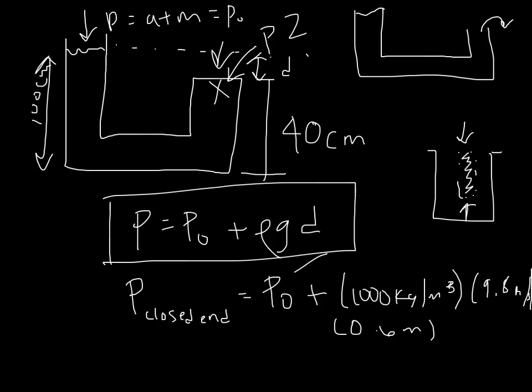So P naught, for those of you that don't know this, atmospheric pressure is 1.1 times 10 to the 5th pascals. So therefore, if we just put that into the calculator, we get that the P at the closed end is equal to 1.07 times 10 to the 5th pascals, which is equal to 1.06 atmospheres.